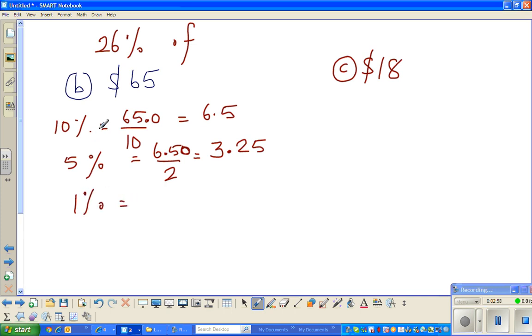1 percent is, as I told you in the last video, is one-tenth of 10 percent. So let me write that again: 1 percent is one-tenth of 10 percent. And we know already 10 percent is 6.5, so which is 6.5 divided by 10. So again, the decimal point will move one place to the left. So this is 0.65.